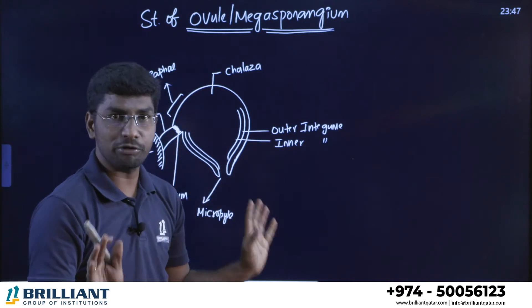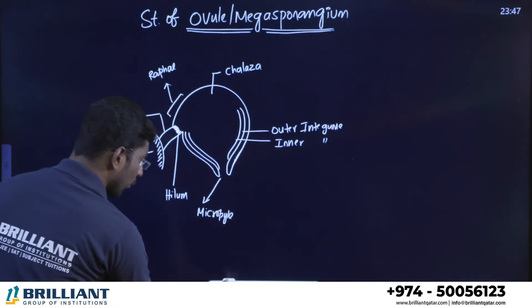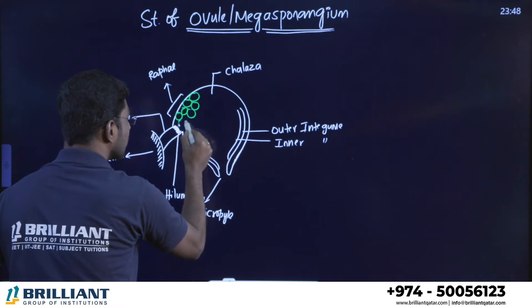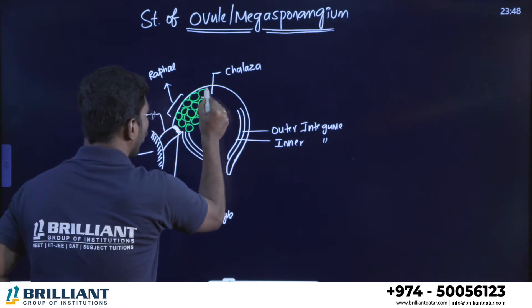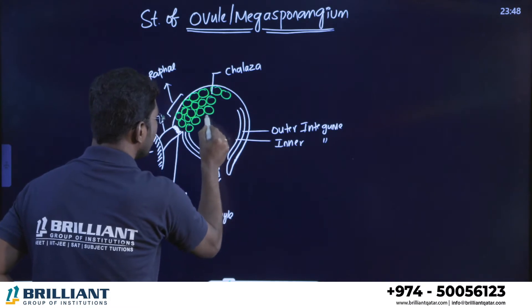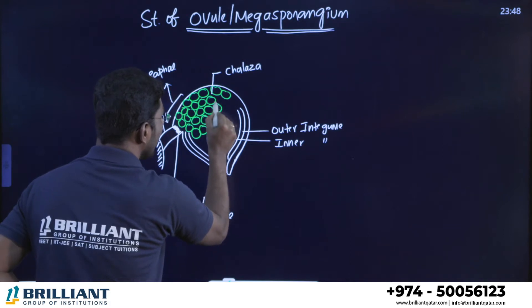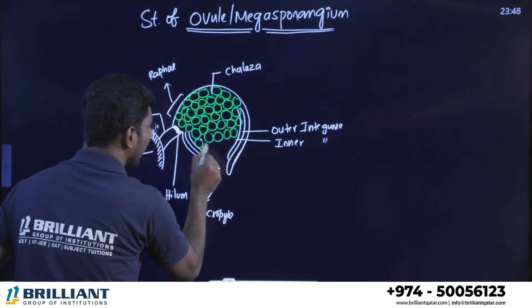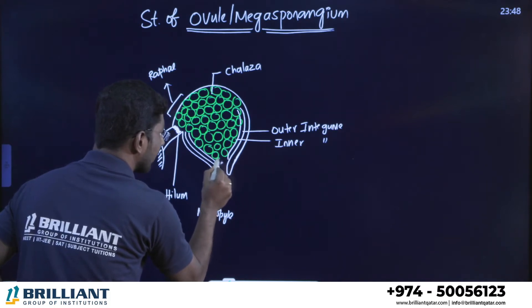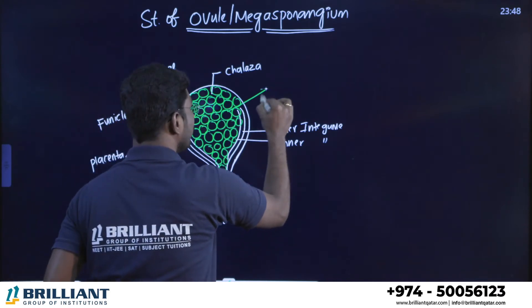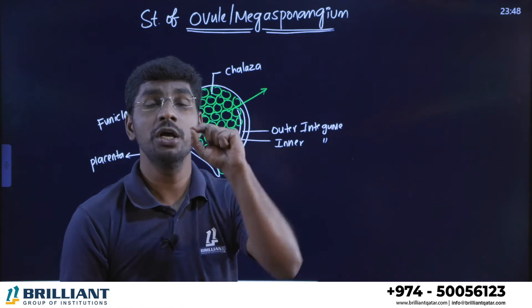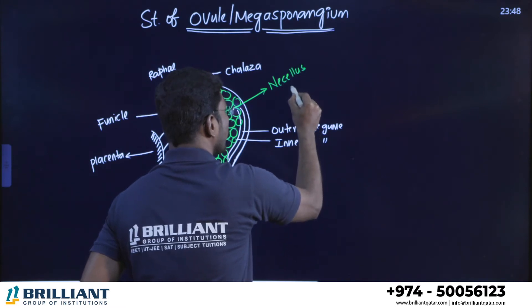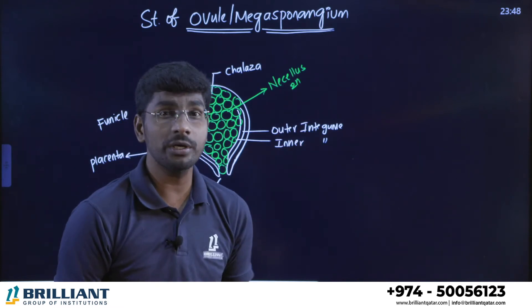Inside the ovule, parenchymatous diploid tissue is present — this is very important for examinations. This parenchymatous diploid tissue filling the ovule is called the nucellus. Important questions asked include: what is the nucellus, what is persistent nucellus, and is the nucellus haploid or diploid? The nucellus tissue is diploid in nature.